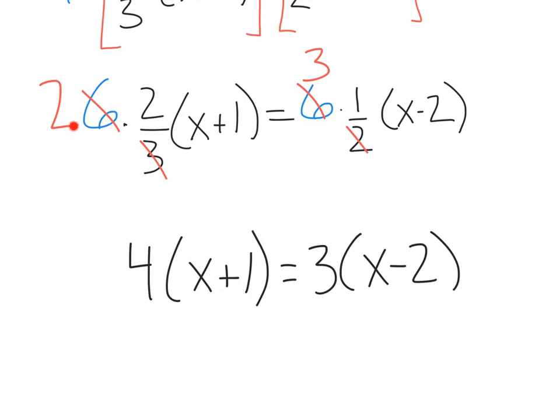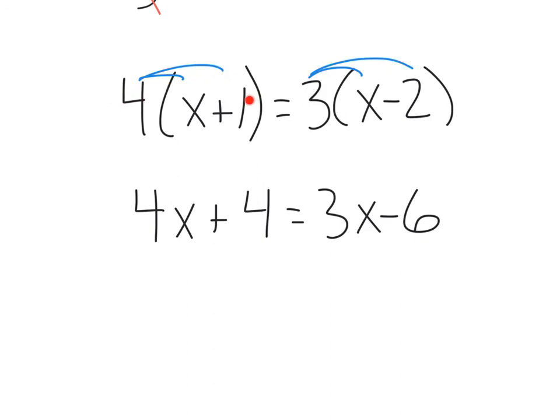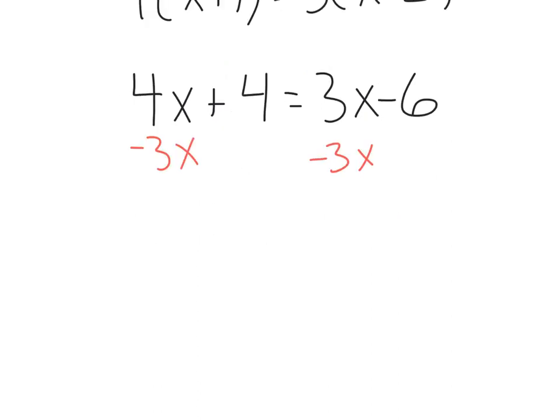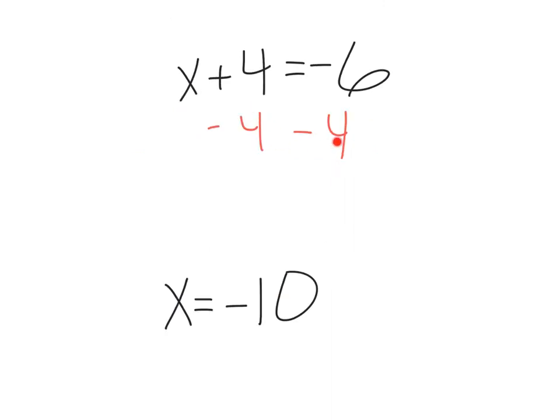Multiplying that in, I have 2 times 2, which is 4 times (x+1), equals 3 times 1, which is 3 times (x-2). Then let's solve. Distribute this 4 out. We get 4x plus 4. Distribute the 3, equals 3x minus 6. Subtract the 3x over, and we're left with x plus 4 equals negative 6. And subtract the 4, we're left with x equals negative 10.